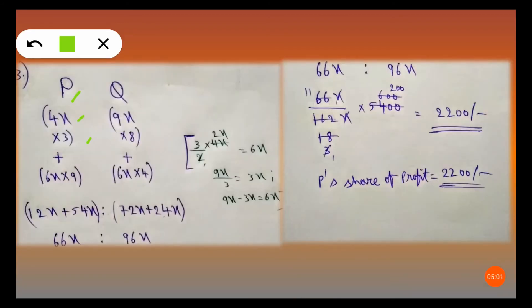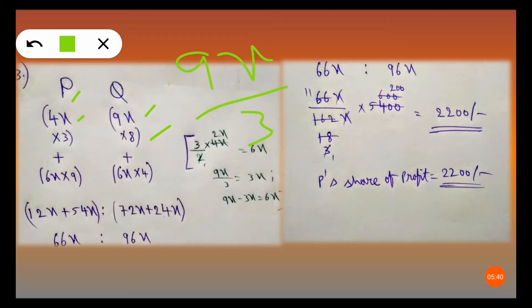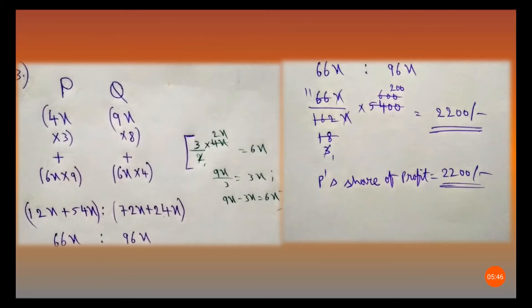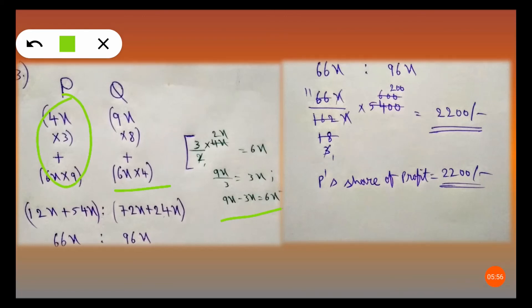P's initial investment is 4x for 3 months: 4x into 3. After 3 months, he increased to 3/2 times 4x, which gives 6x. That 6x investment runs for the remaining 9 months: 6x into 9. Q invested 9x. After 8 months he withdrew one-third, which is 9x divided by 3 = 3x, leaving him with 9x minus 3x = 6x for the final 4 months: 6x into 4.